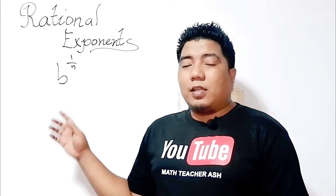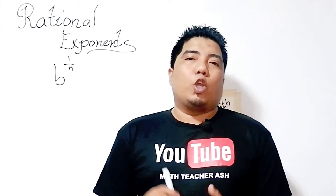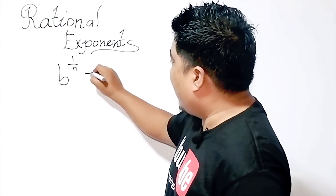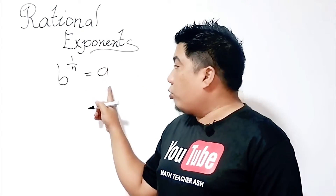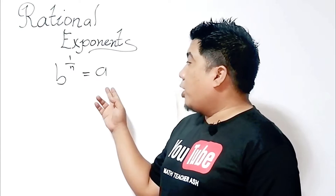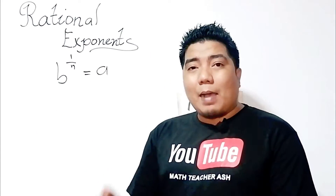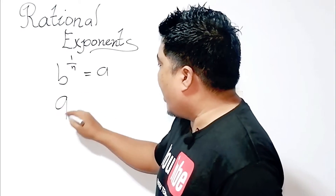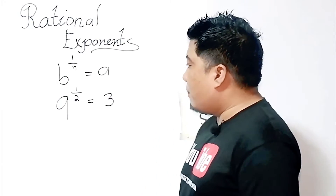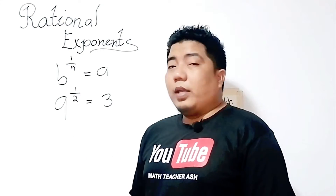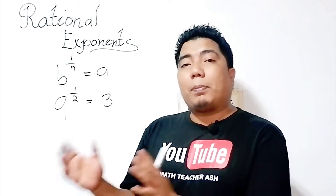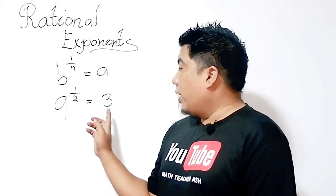What does this mean? If you encounter this kind of expression, it means you will get the root of the given base. For example, 9 to the power of 1 half is equal to 3. Here, 9 is the base with an exponent of 1 half. The root of 9 is equal to 3. Though the root of 9 can be positive 3 and negative 3, the principal root is positive 3.